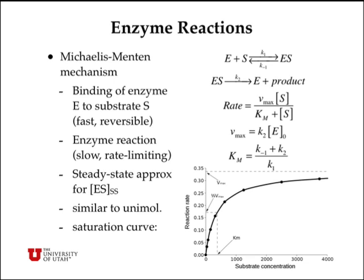Very similar to the unimolecular reaction case, we can use the steady-state approximation to solve this set of reactions to get the Michaelis-Menten constants: the maximum velocity of reaction, Vmax, and the Michaelis constant, Km. At very high concentrations of substrate, the rate will saturate when all of the enzyme is tied up as the ES complex. As you reduce the substrate concentration you'll get a fall-off region, much as we saw from unimolecular reactions. When you get to half the saturation rate, the substrate concentration at that point is equal to the Michaelis constant.